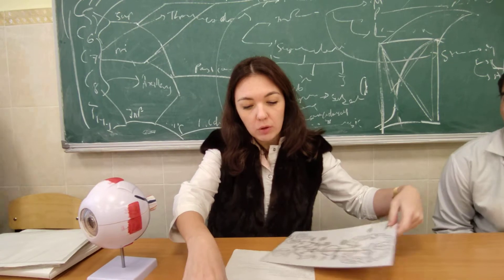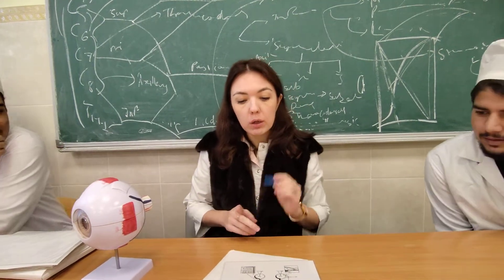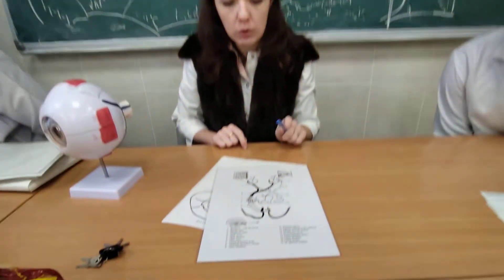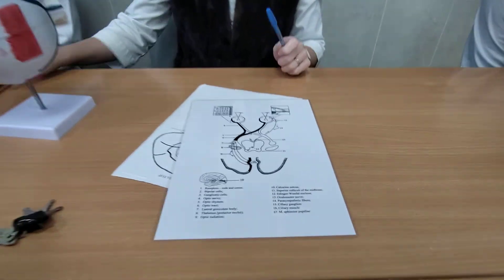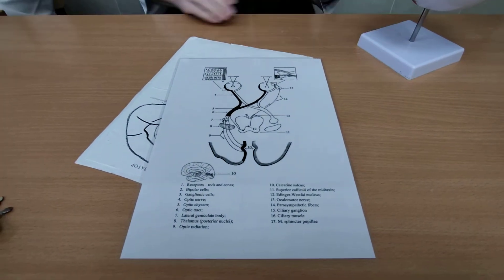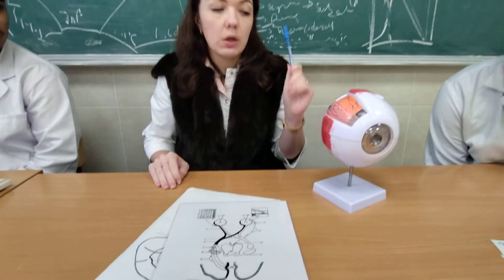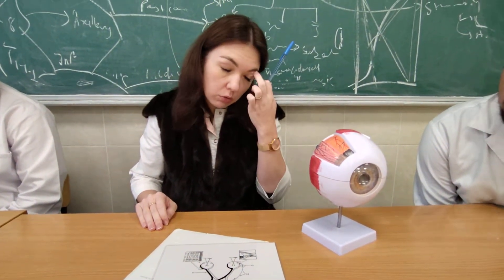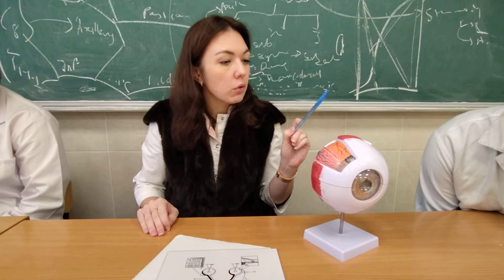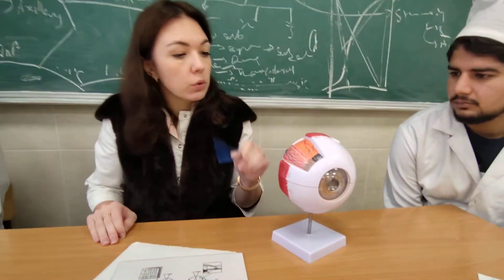The first topic will be the organ of vision and organ of olfaction. It's a very easy topic — I think you will read it yourself. You should revise the structure and orbit, all the walls and communications. This is the eyeball, and the eyeball consists of tunics.